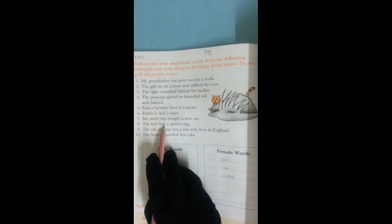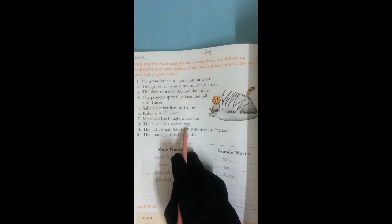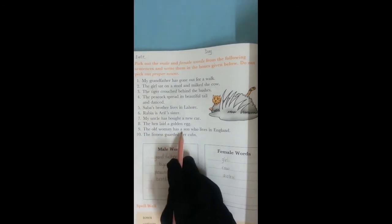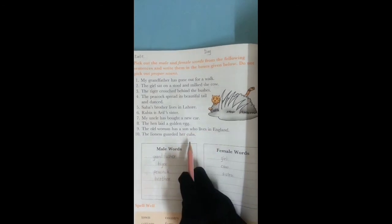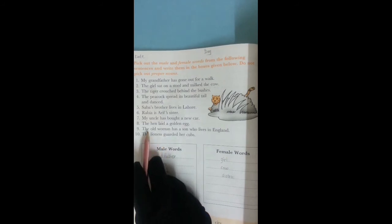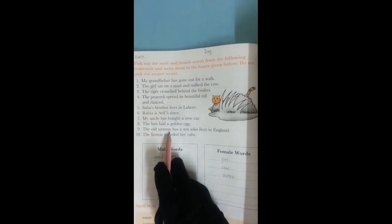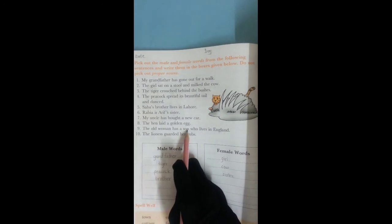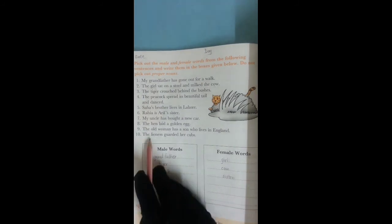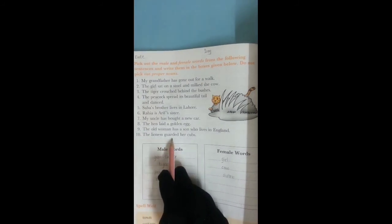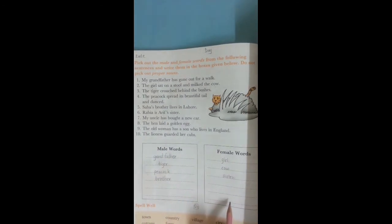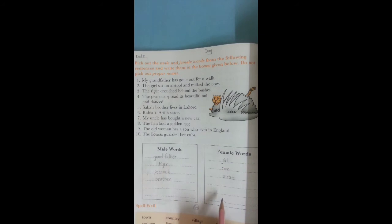The hen laid a golden egg. In this sentence, hen. We write in the female column. The old woman has a son who lives in England. Find from this sentence. Yes, woman. We write in the female column. And is another word in this sentence. Yes, son. We write son in the male column. Read the last line. The lioness guarded her cubs. Yes, the word lioness. We write in the female column.